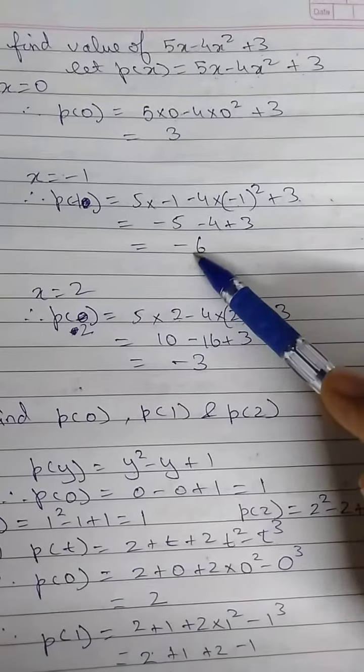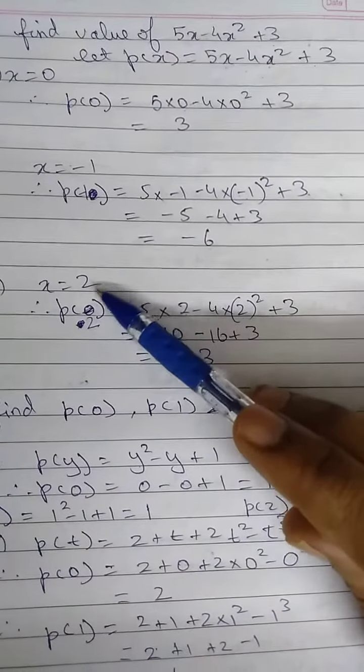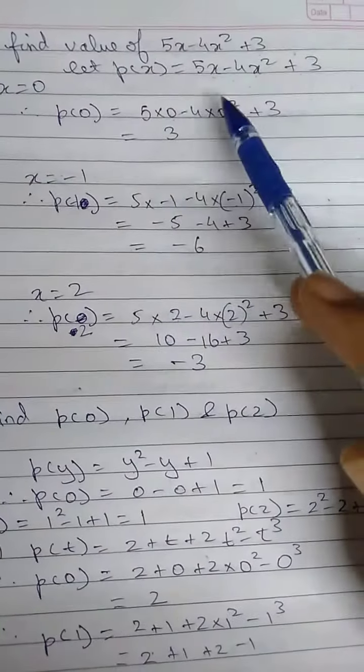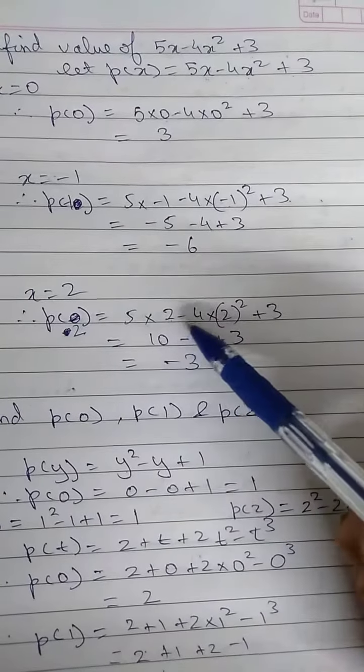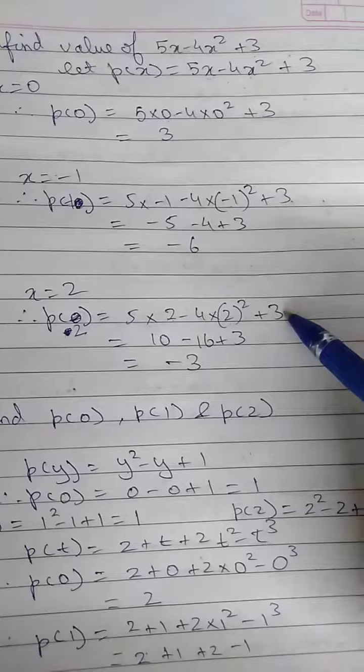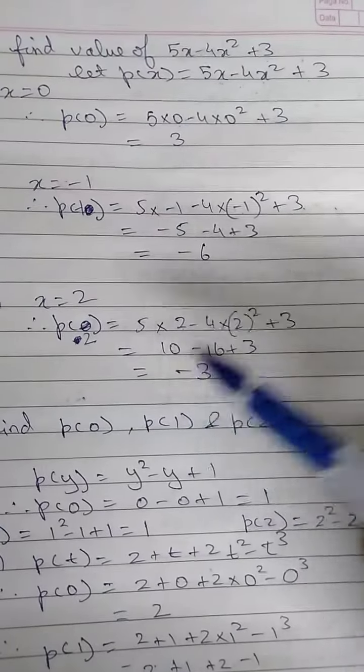Similarly, at x equals 2, this is p(2). p(2) means wherever there is x, you will replace that x with 2. So this is 5 into 2 minus 4 into 2 square plus 3, hence you get the answer minus 3.